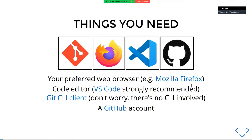Before we get started today, we will need a couple of tools. You will need a web browser — Mozilla Firefox or Chrome will work. You will need a code editor, so preferably get VS Code installed. If you don't have a local Git client installed, it's best if you install it. We won't be using Git directly, but through VS Code itself. And if you don't have a GitHub account, it will be best to get one so we can make use of GitHub features to publish our website later.